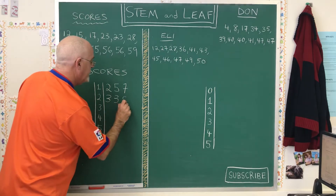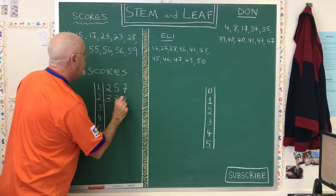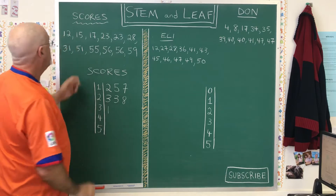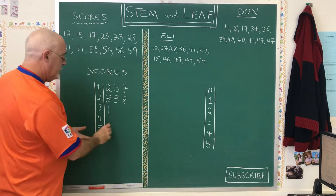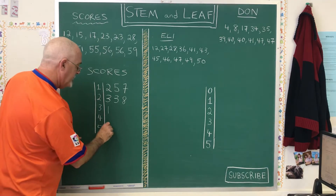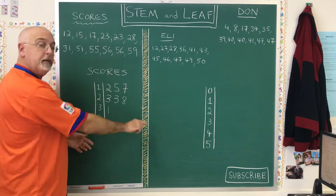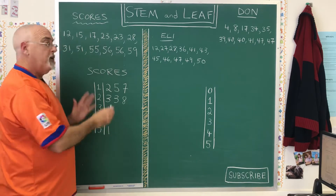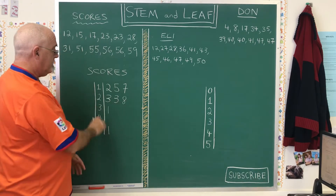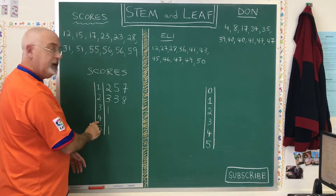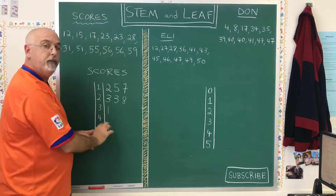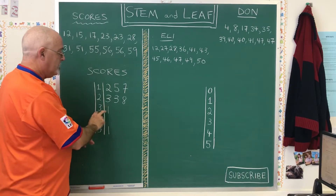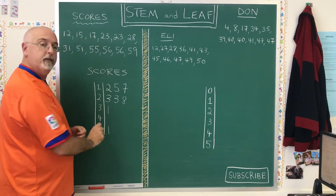28 is the next value, and then 31, and then 51. I don't have any numbers in the 40s, so I'm just skipping past this line and writing 51. When you read this, you have to realize there is no number that starts with 4 — we're just going from 31 to 51.